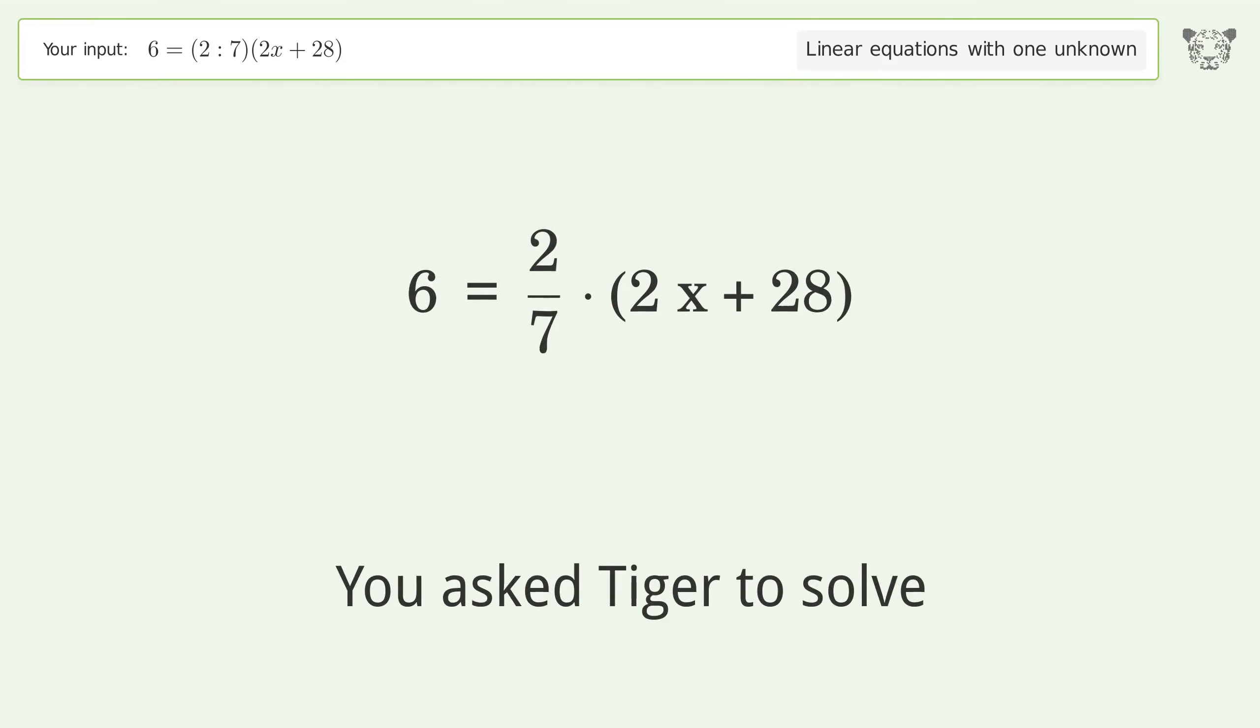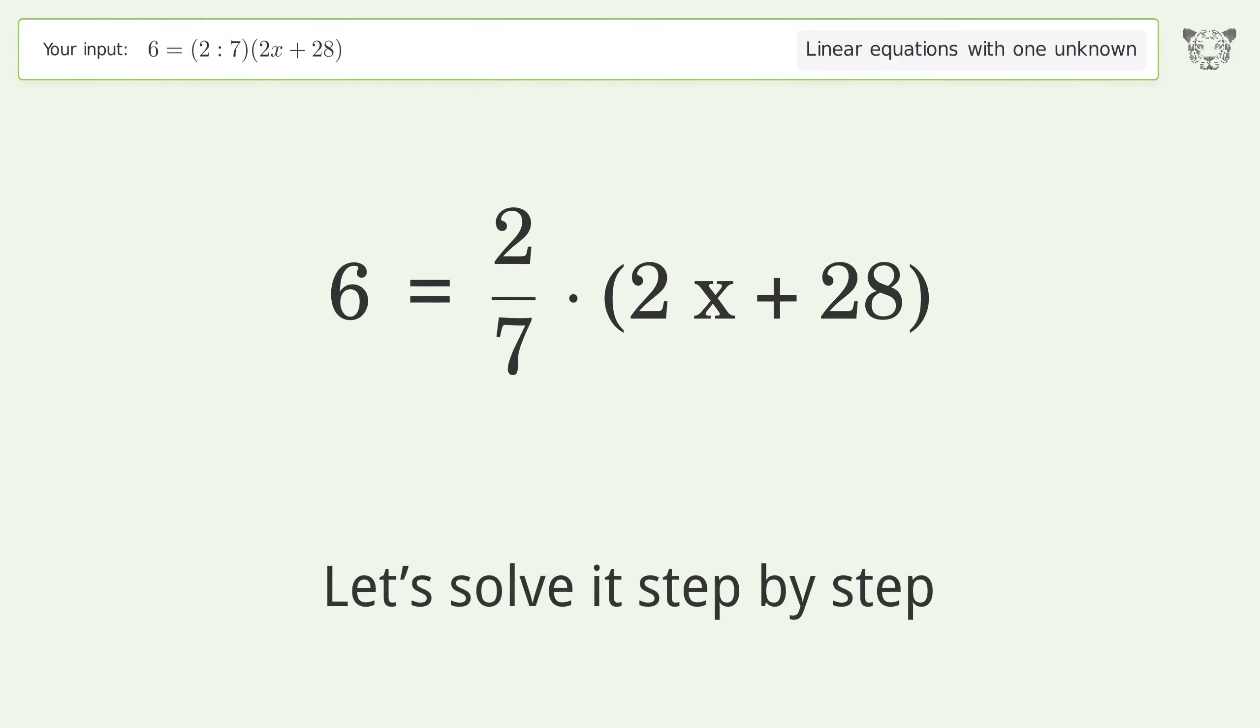You asked Tiger to solve this. This deals with linear equations with one unknown. The final result is x equals negative 7 over 2. Let's solve it step by step.